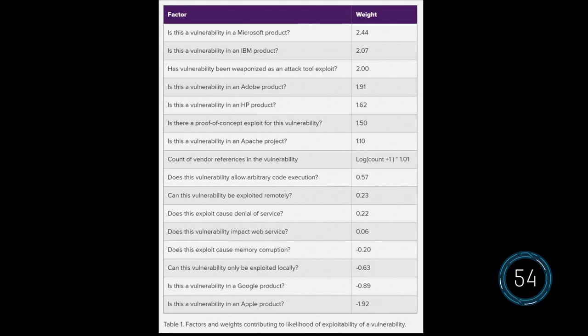Based on the machine learning analysis, there were 16 significant factors usable to determine predictability. Of these, the four major categories are who wrote it, the type of impact, how the vulnerability can be exploited, and the count of references published with the vulnerability.